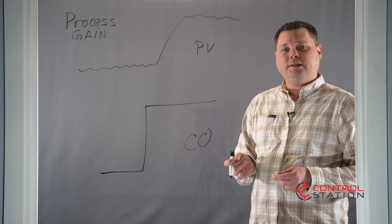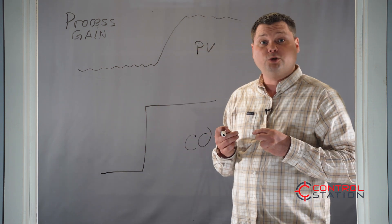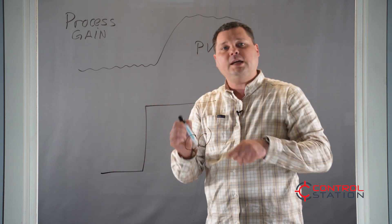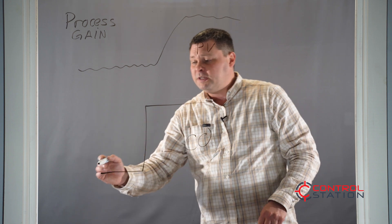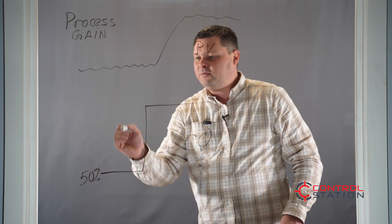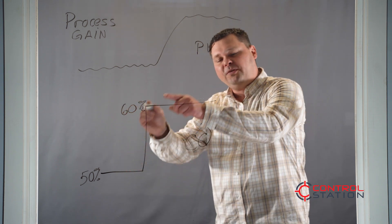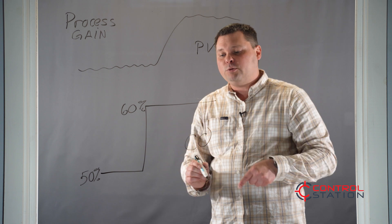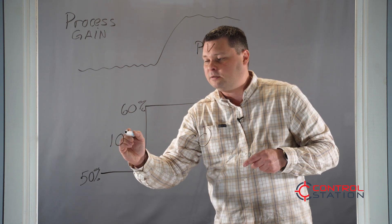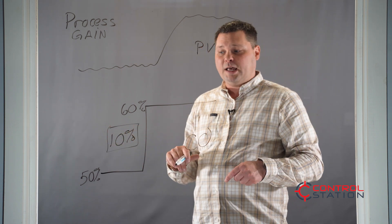How do we calculate that? First we have to understand how far did we move the controller output — from A to B, how far did that go? In this example we're going to say we move the controller output from 50 percent to 60 percent. When we go from 50 to 60 percent that means we move the controller output or the valve 10 percent.